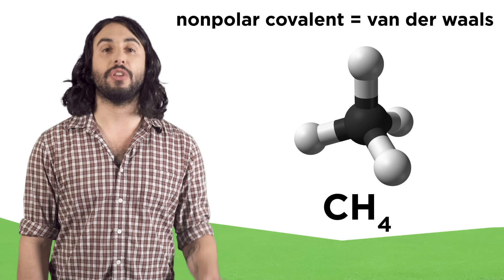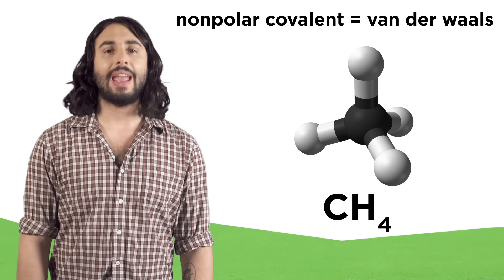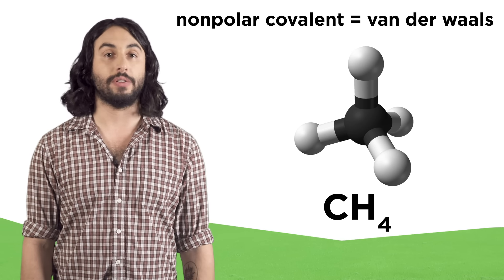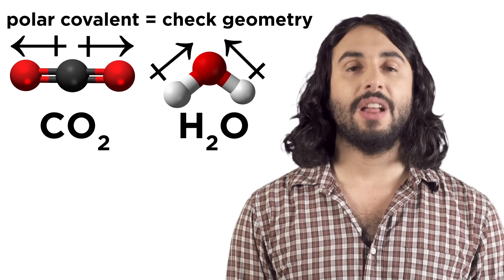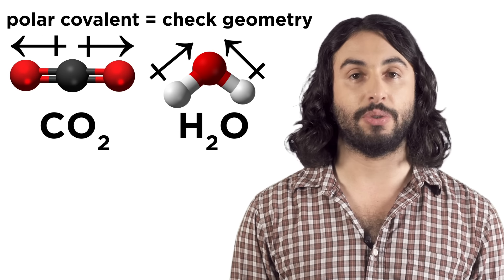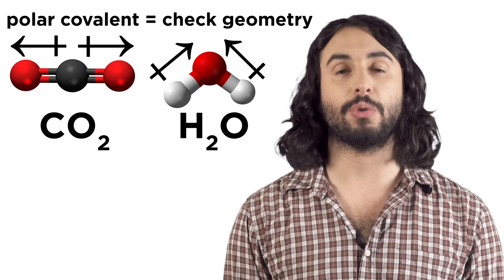We need to be able to look at a molecule and decide what kind of interactions it will make. If it is a covalent compound with non-polar bonds, it can only do van der Waals. If it is a covalent compound with polar bonds, then we must look at the geometry to see if there is an overall dipole.